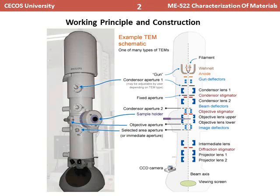The working principle and construction of transmission electron microscopy is summarized in this slide. The main parts of TEM are the electron gun and a series of lenses such as condenser lens, objective lens, intermediate lens, and projector lens. There are also other parts such as stigmators and apertures.